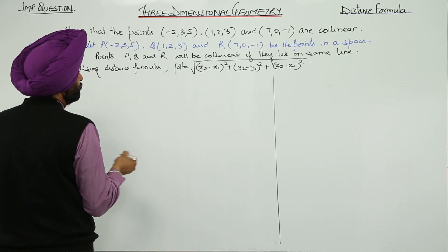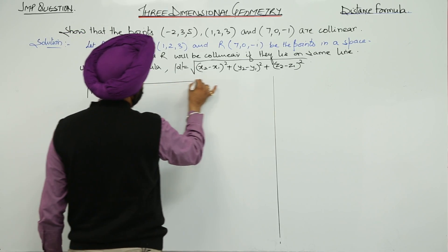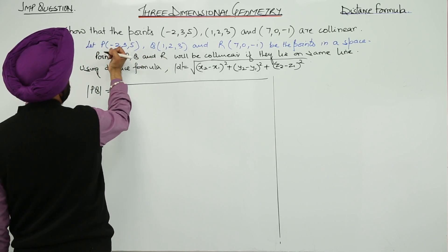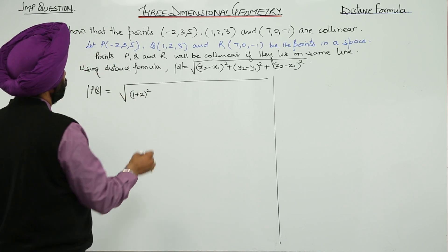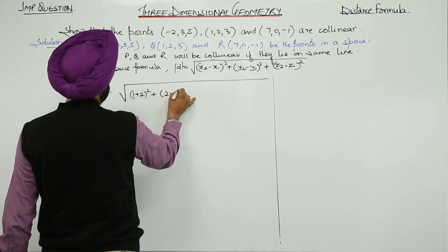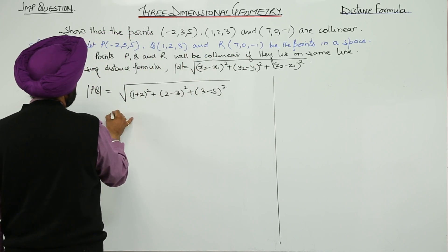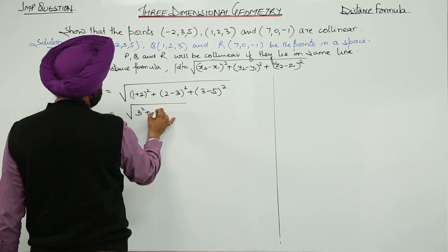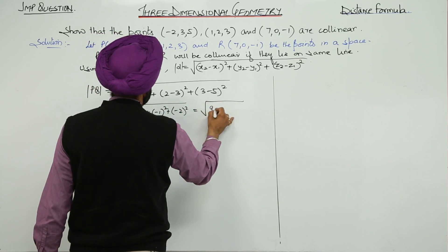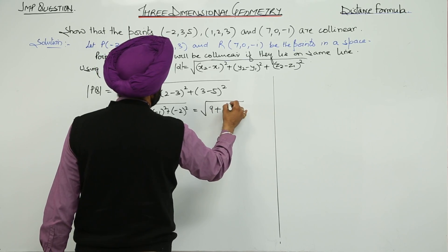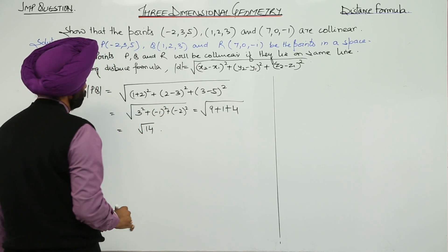Let's first find distance PQ. PQ equals—we are discussing these two points P and Q. (1 plus 2) whole square plus (2 minus 3) whole square plus (3 minus 5) whole square. 3 square plus minus 1 square plus negative 2 square. This is 9 plus 1 plus 4, under root 14.